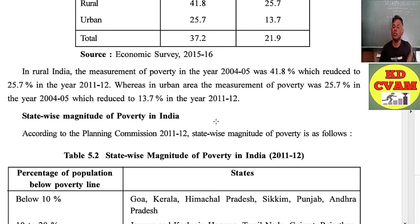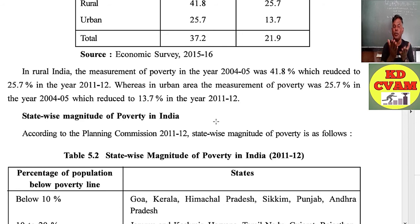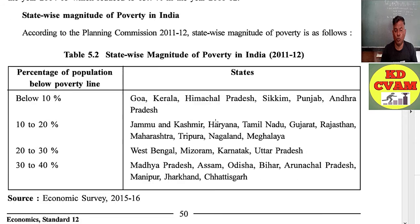Looking at the table on measurement of poverty in India: in rural India, the poverty rate in 2004-05 was 41.8%, which reduced to 25.7% in 2011-12. In urban areas, the poverty rate was 25.7%, which reduced to 13.7% in 2011-12. State-wise, according to the Planning Commission 2011-12, the magnitude of poverty is as follows.